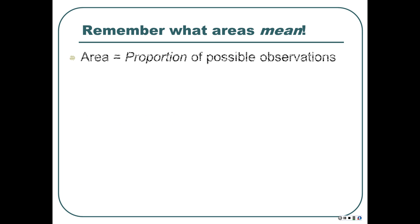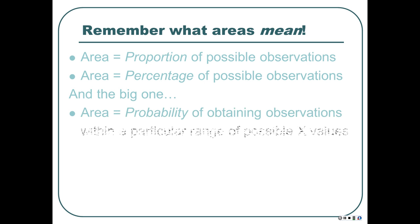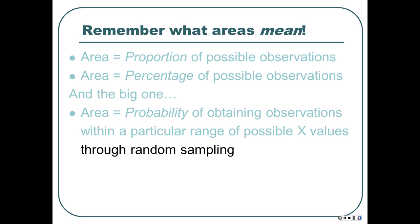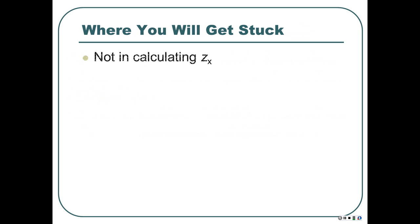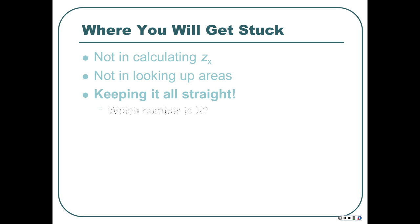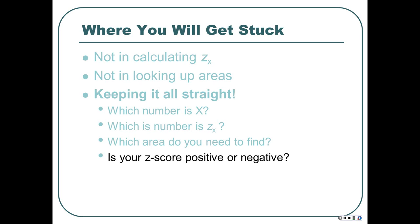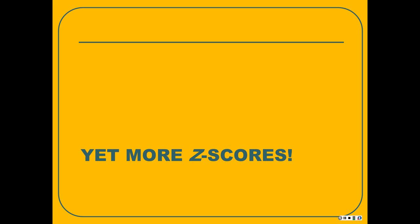Area can mean the proportion of possible observations, the percentage of possible observations, and most importantly the probability of obtaining observations within a particular range through random sampling. Proportion, percentage, probability. Where are you going to get stuck? Not in calculating Z — that's usually pretty easy once you figure out the mechanics. Not in looking up areas using R or the table. You'll get stuck keeping it all straight: which number is the raw score, which is the Z-score, which is the probability or percentage or area, and whether your Z-score is positive or negative. That's what you need to practice.